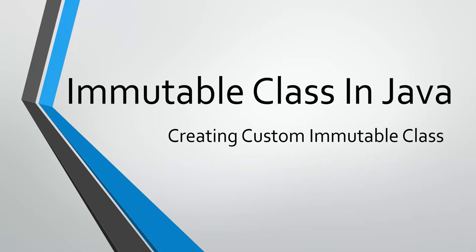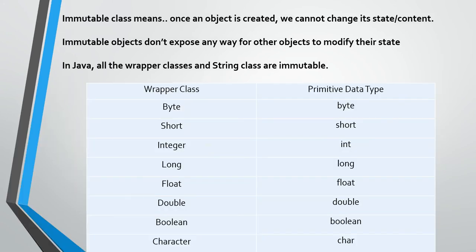In this video we'll see how to create a custom immutable class. Immutable means unchangeable or unmodifiable — once we do something it cannot be changed. Immutable classes mean once an object is created we cannot change its state or content. Immutable objects don't expose any way for other objects to modify their state.